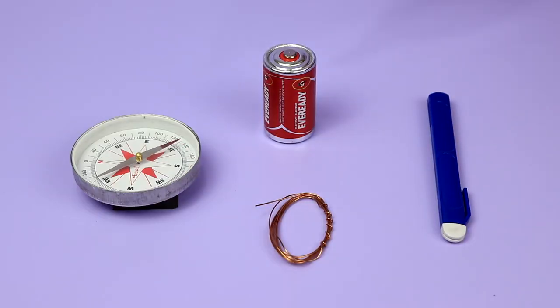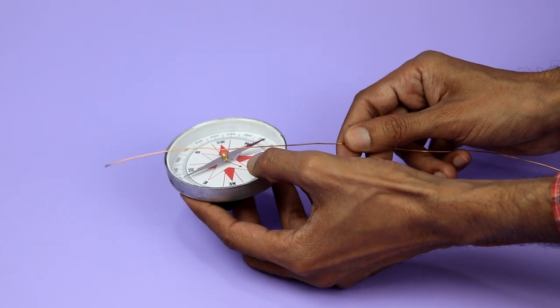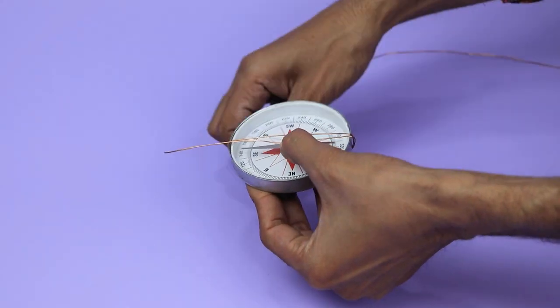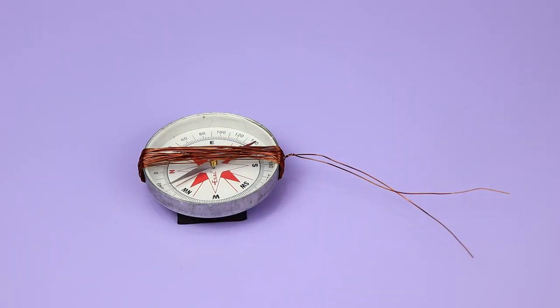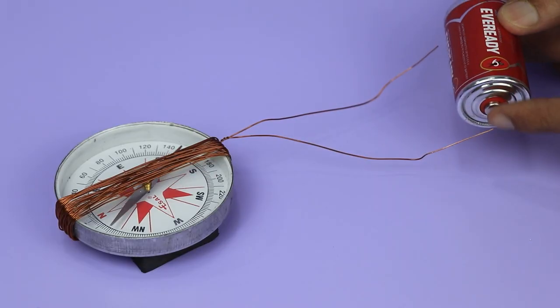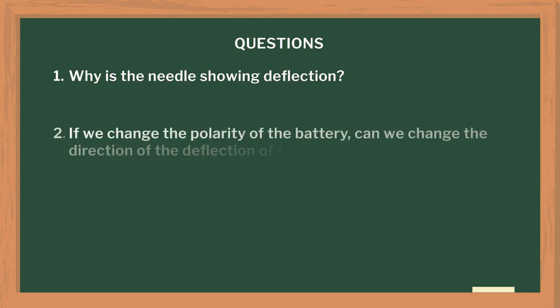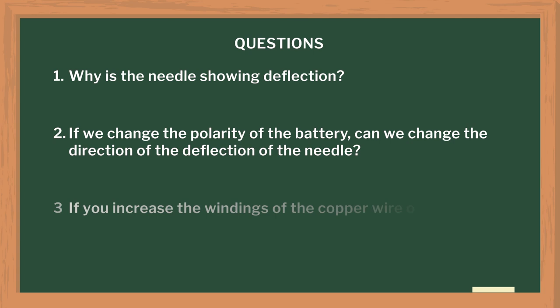Let's see one more interesting activity on this concept — to make a galvanometer. To make a galvanometer, we will need a compass, a battery, insulated copper wire, and a cutter. Wrap the wire tightly around the compass such that it is aligned with the needle of the compass so we will be able to see the needle's deflection clearly. Leave about 10 centimeters of wire at each end and remove its insulation. Let's connect it to the circuit. Wow, we can see the needle deflecting! You can ask: why is the needle showing deflection? If we change the polarity of the battery, can we change the direction of deflection? You can also ask: if you increase the windings of copper wire on the compass, what will happen? Students will really enjoy this activity and understand the magnetic effects of electric current.